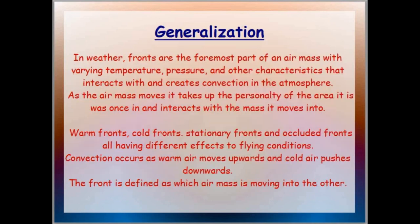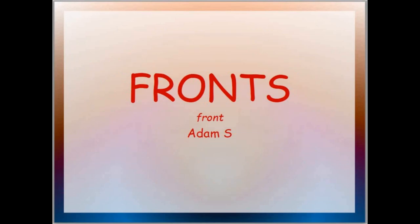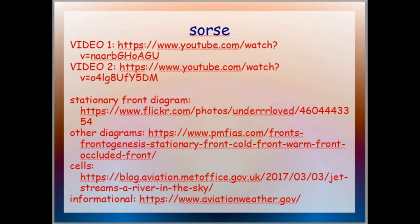For the conclusion, let's revisit the generalization: weather fronts are the foremost part of an air mass with varying temperature, pressure, and other characteristics that interacts with and creates convection in the atmosphere. There are warm fronts and cold fronts, and as an air mass moves it takes up the personality of the area it was once in, interacts with the mass it moves into, and causes convection — which is action in the atmosphere: clouds being formed, wind, and rain. The front is defined as which air mass is moving into the other. That was the presentation — pretty nice. We also have our sources listed.